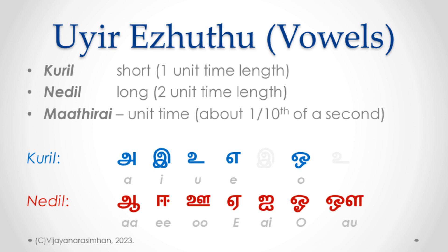There are five short vowels, which we call Kuril, and seven long vowels — making 12 vowels in Tamil total. As you'll notice, each short vowel is paired with its long counterpart: a, aa; and so on.